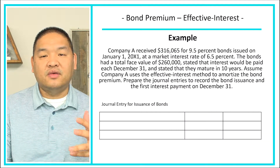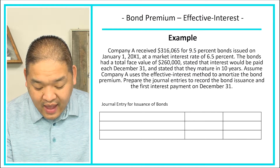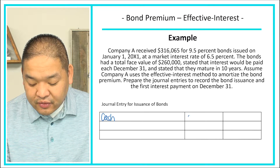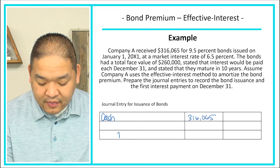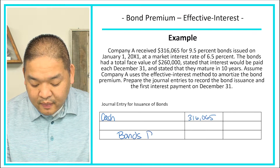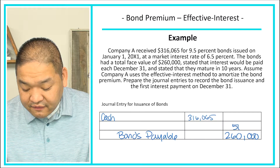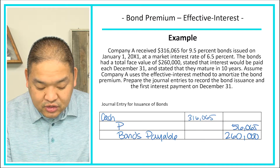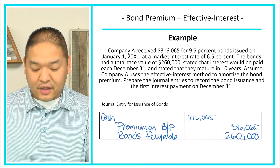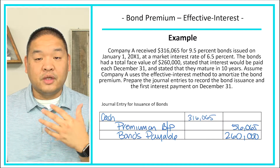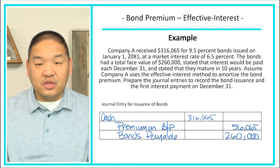When we issued these bonds, we would debit cash in the amount of $316,065. Then we would credit bonds payable as a liability in the amount of $260,000. The difference — $56,065 — is going to go into premium on bonds payable. We're then going to use that premium as part of the repayment of the interest.